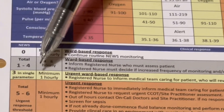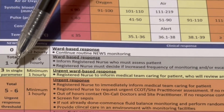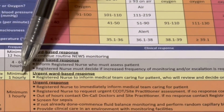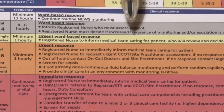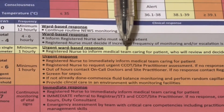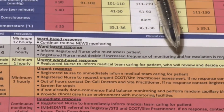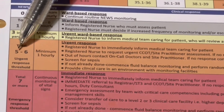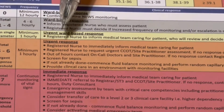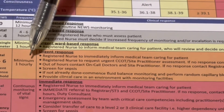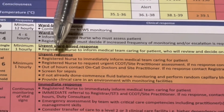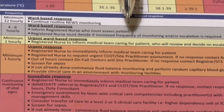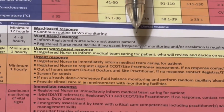There's an important exception: if you get a score of three in a single parameter, the monitoring frequency becomes a minimum of hourly, and an urgent ward-based response must be followed — the registered nurse should inform the medical team caring for the patient to review and decide on escalation. Similarly, if the total score is 5 to 6, monitoring is hourly with an urgent response — the registered nurse must immediately inform the doctor and the critical care team or on-call doctors.